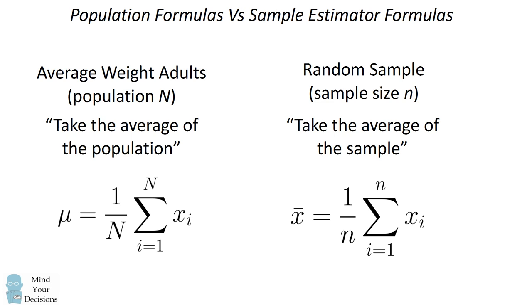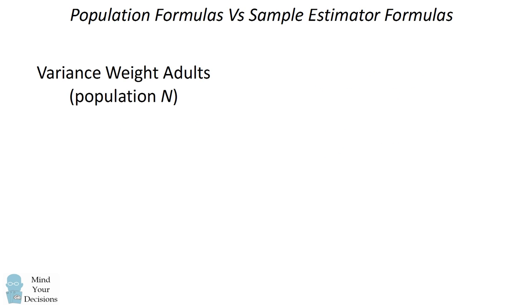But now let me ask you another question. Let's say you wanted to calculate the variance of the weight in adults. In a population of size N, the formula is to look at the square difference from the mean, and then divide that by the population size N.